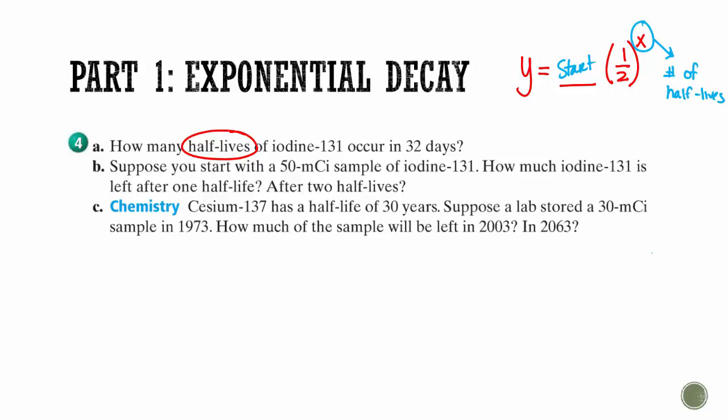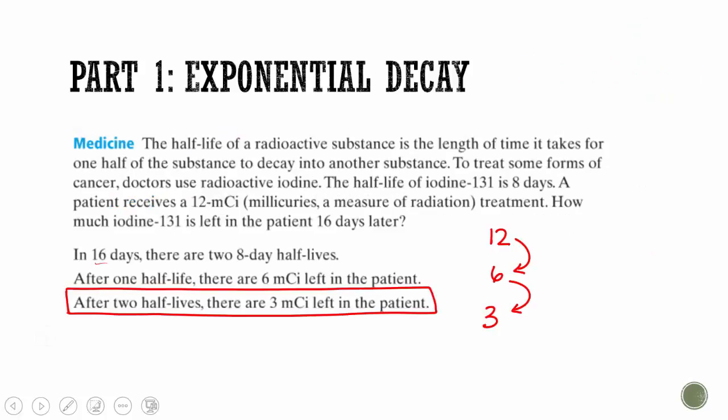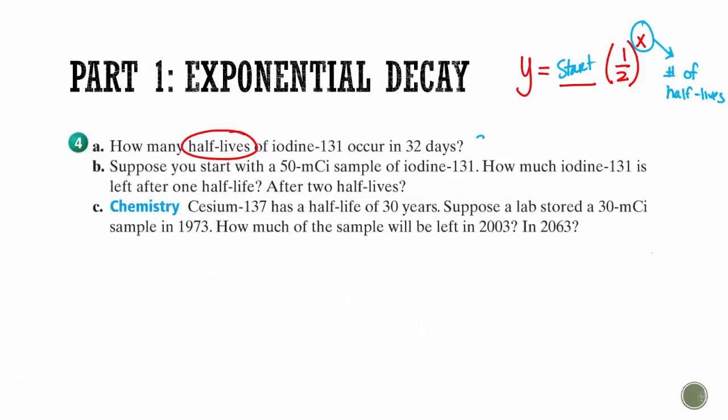So, same problem, how many half-lives occur in 32 days? So if we come here, it says that the half-life is 8 days. So if we have 32 days, we can divide it by 8, and that's 4 half-lives. So let's say I start with a 50 millicurie sample of this iodine. How much would be left after one half-life and after two half-lives?